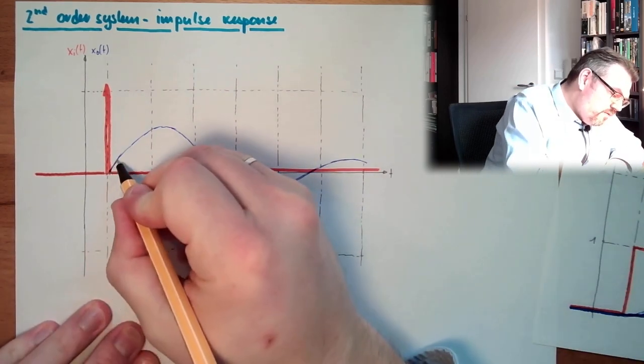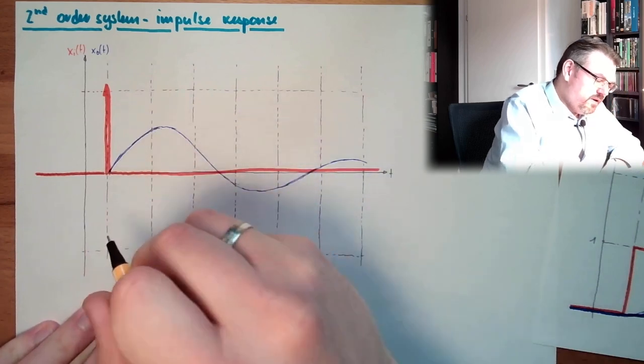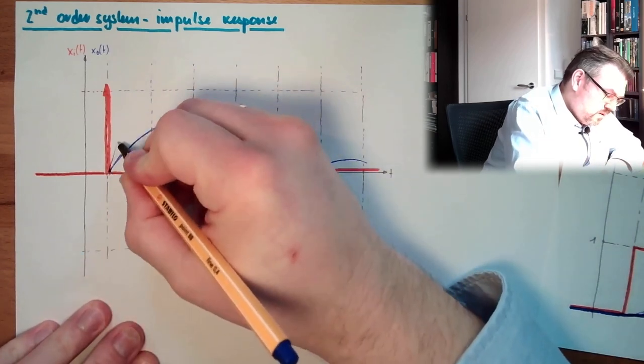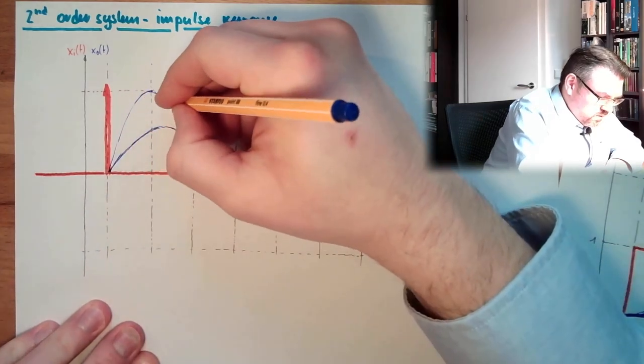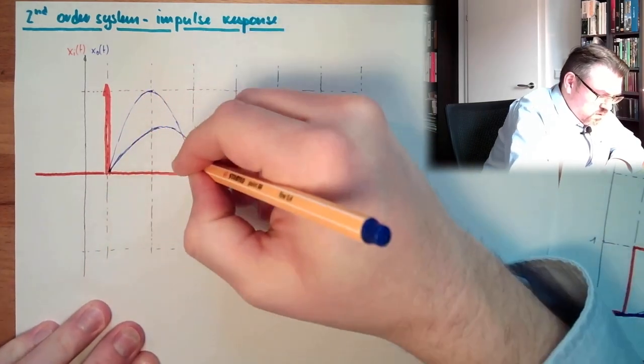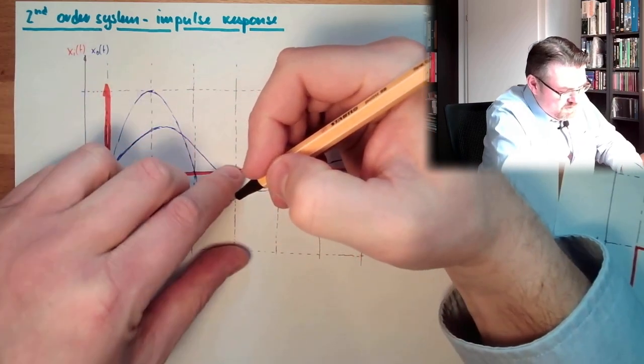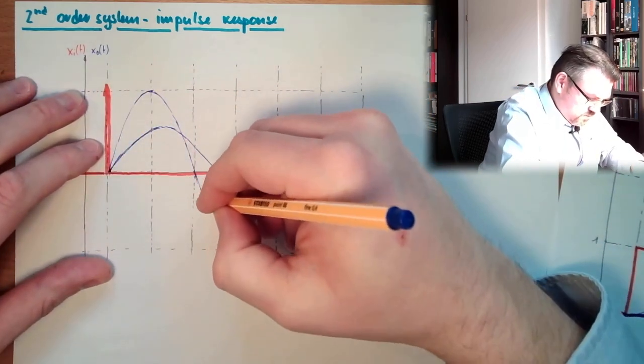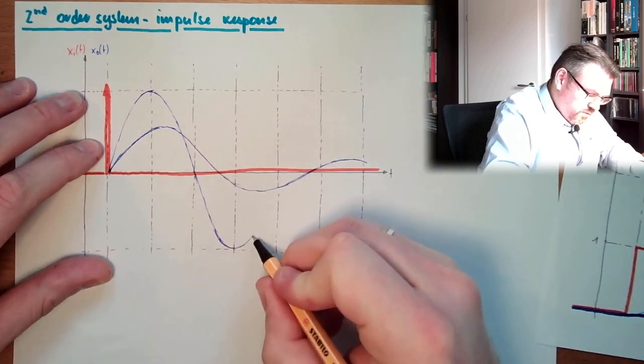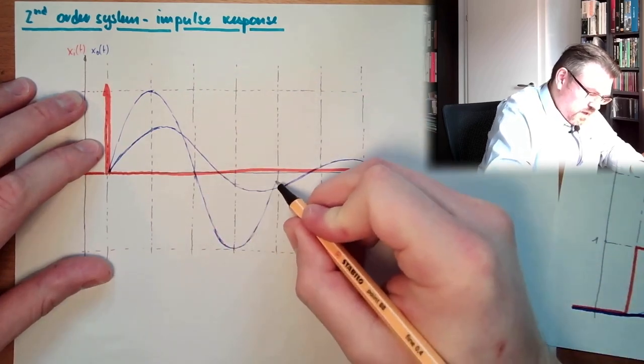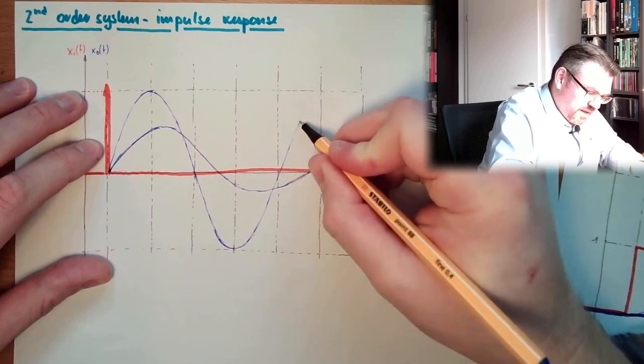If we would have damping zero, then we would go up here, down, go down at exactly the same amplitude, and we would have, again, undamped swinging.